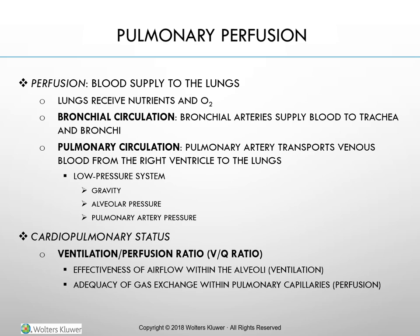Pulmonary circulation: The pulmonary artery transports venous blood from the right ventricle to the lungs, dividing into right and left branches. Blood circulates through the pulmonary capillary bed where diffusion of oxygen and CO2 occurs, then returns to the left atrium through pulmonary veins. Pulmonary circulation is a low-pressure system — gravity, alveolar pressure, and pulmonary artery pressure all affect perfusion. Increased alveolar pressure can narrow or collapse capillaries; decreased pulmonary artery pressure results in decreased perfusion.